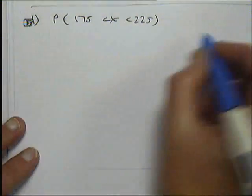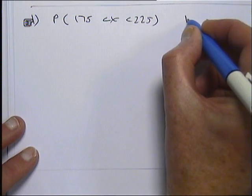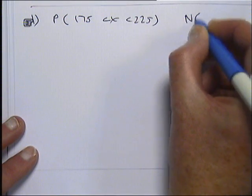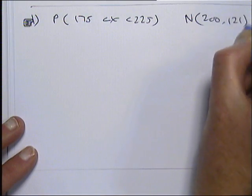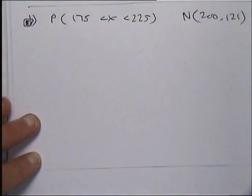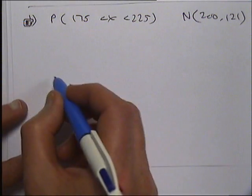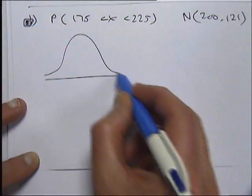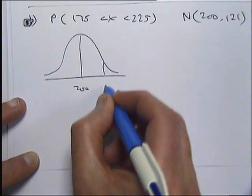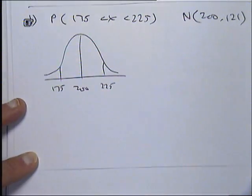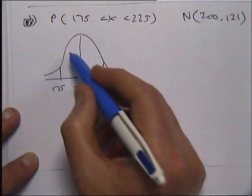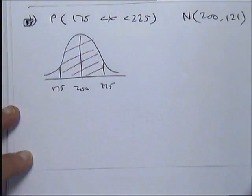Part D is asking for the probability X is between 175 and 225. It's the same distribution as before, with a mean of 200 and a variance of 121. If you just start off doing the drawing, we've got a mean of 200, we've got a 225 value, and we've got a 175 value. And we're interested in the area here that's in between.